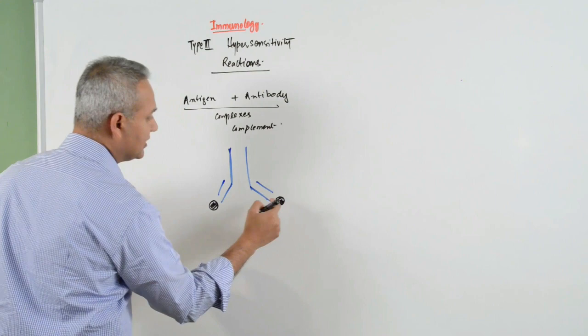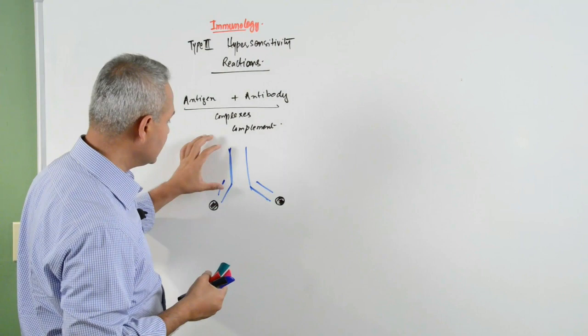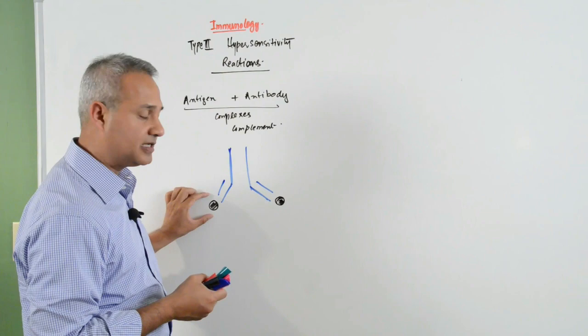Let's say these are the antigens connected with some antigen. Then what happens is, I think we have talked about it in the past, once an immunoglobulin, once an antibody combines with an antigen, binds with an antigen.